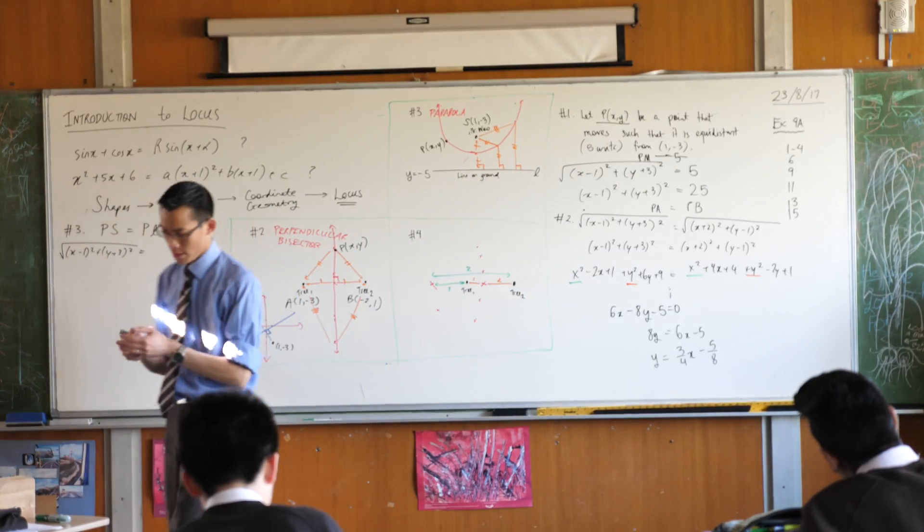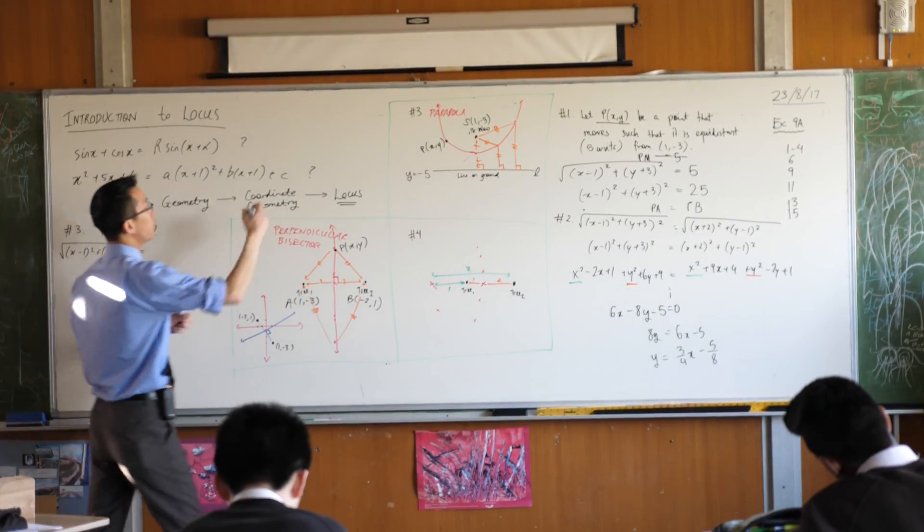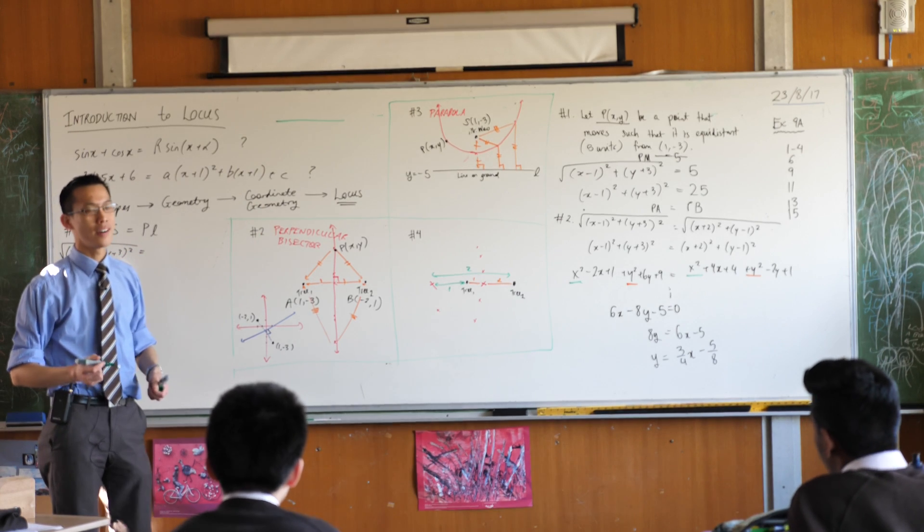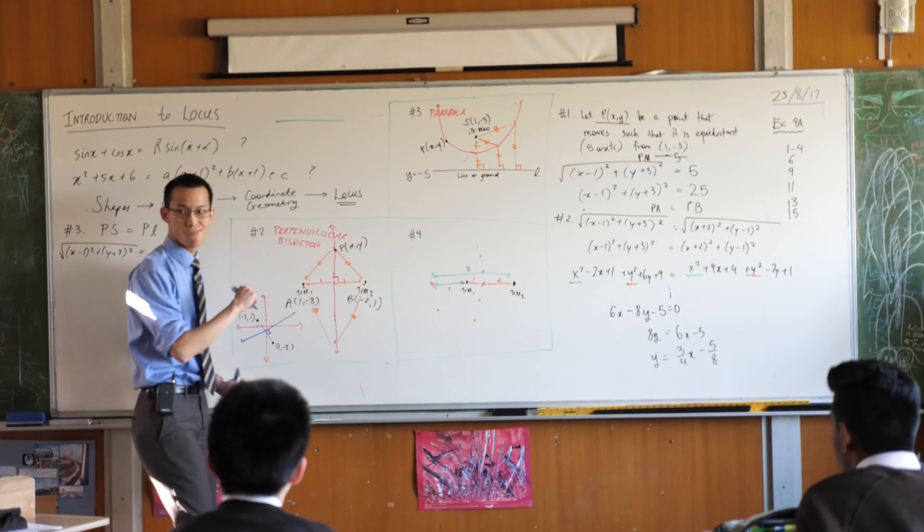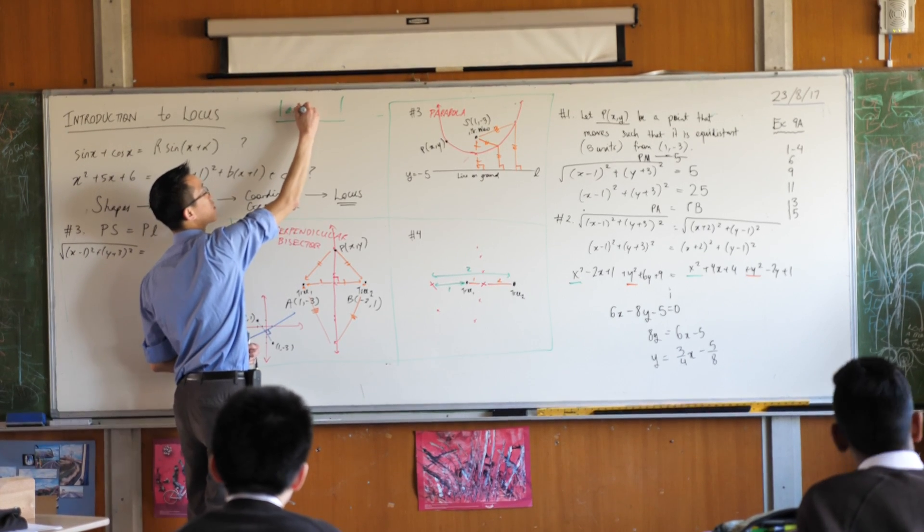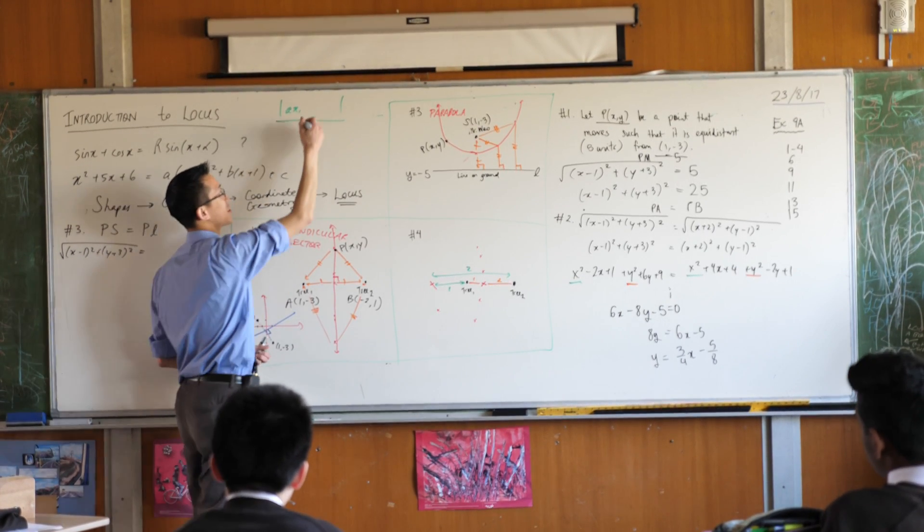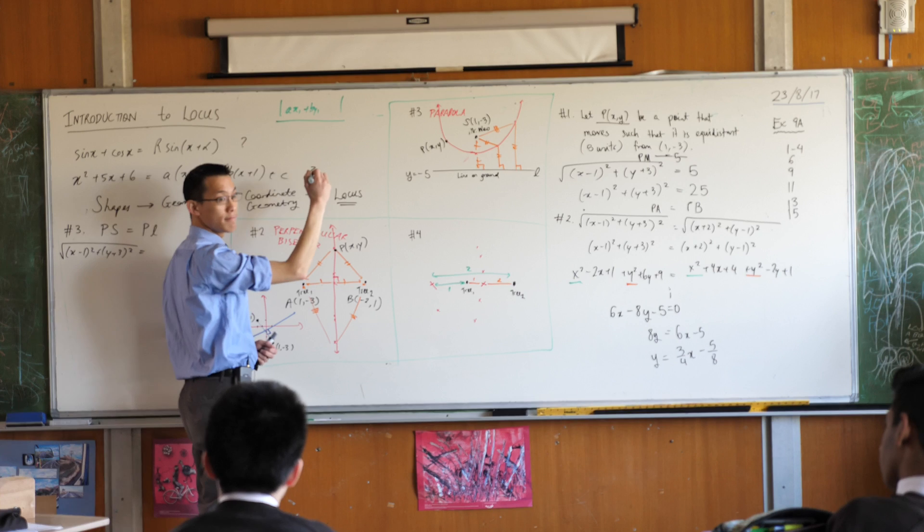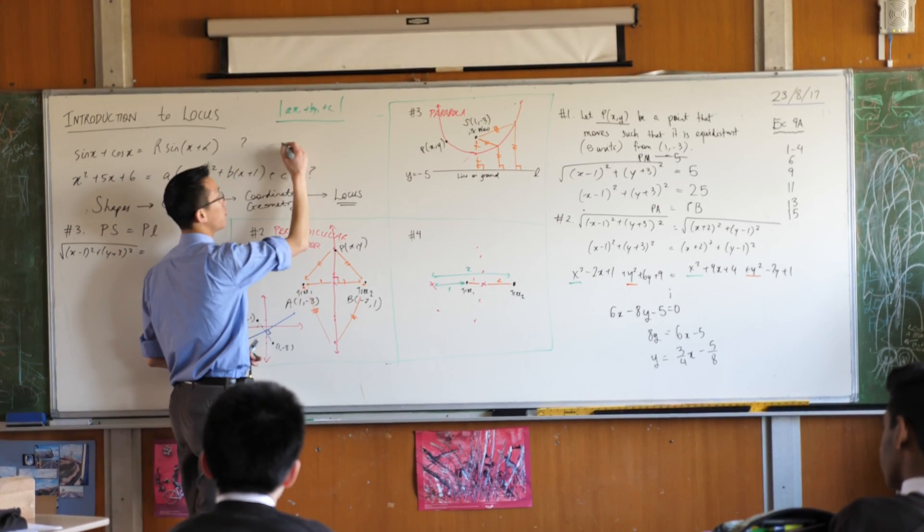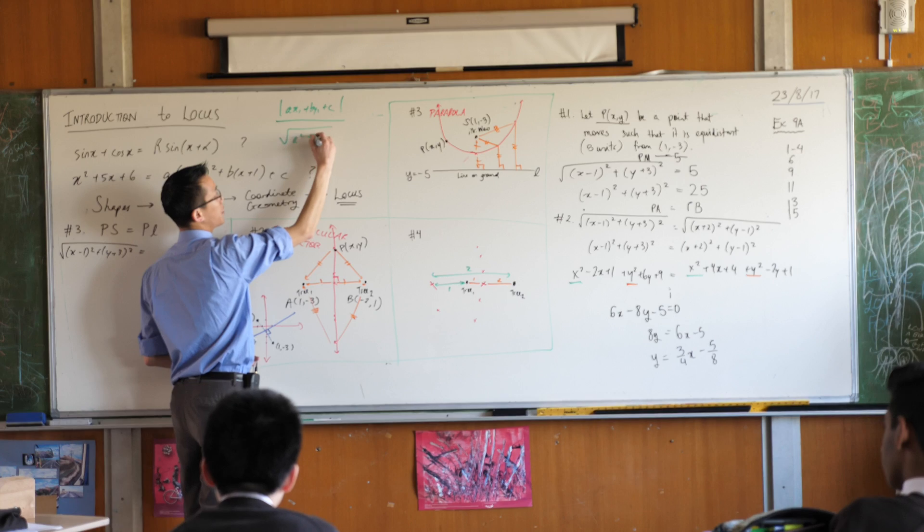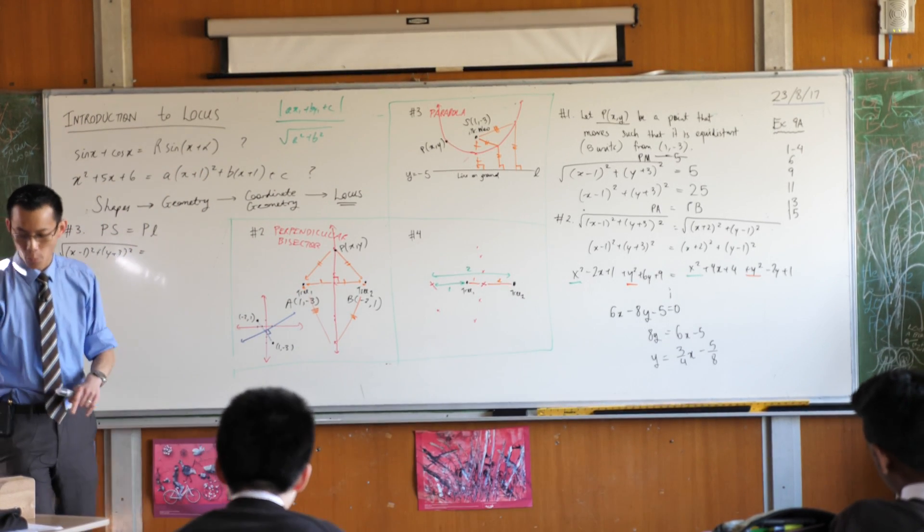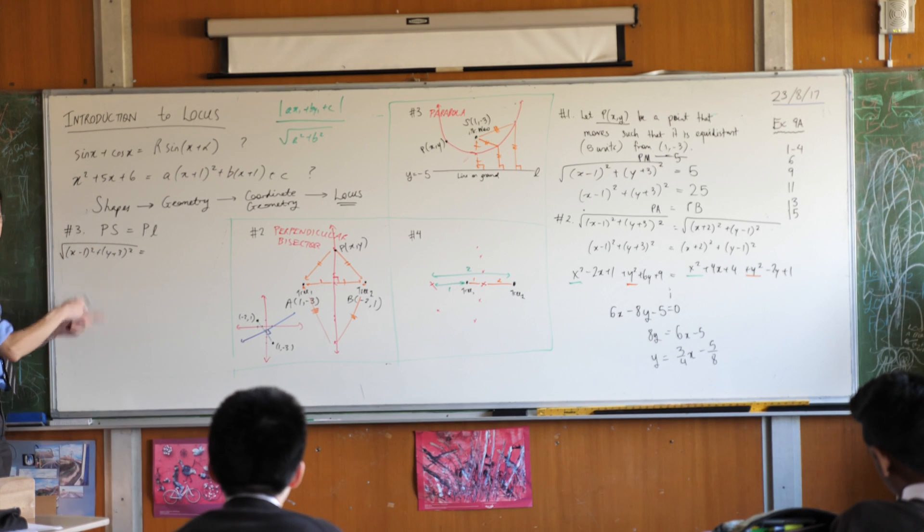Now maybe it will help you, it will assist you to write off on the side here the perpendicular distance formula. It's a fraction. Does anyone remember? What's on the top? Absolute value and then what? Ax₁ plus By₁ plus C, and then on the bottom you've got the square root which we get from Pythagoras. Okay, so that's the perpendicular distance formula, but what does it look like for this?